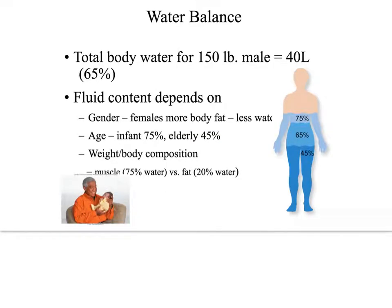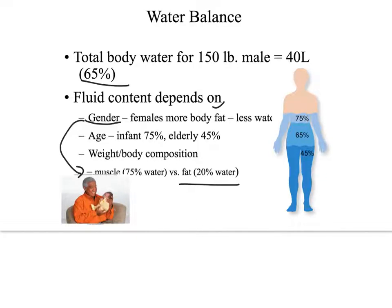So, water balance. In general, total water for a 150-pound male is about 40 liters — about 65% of their total weight. When you look at fluid content and how much water we actually have, it depends on gender. Females have more body fat. Fat is about 20% water and muscle is about 75% water. Females have more body fat to keep babies alive, so they have less water overall.